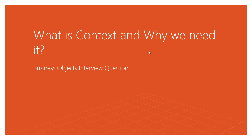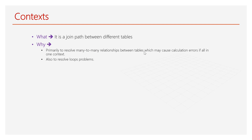So let's see this practically along with some theory concepts. Basically, what is context? A context is a join path between different tables. In a universe, there are many tables which are dimension tables and fact tables, joined with each other. The path between these tables is called a context, and we need it to resolve many-to-many relationships between tables, which may cause calculation errors, and also to resolve loop problems.